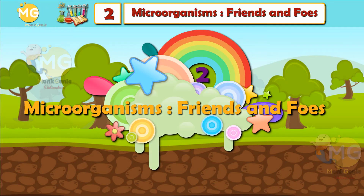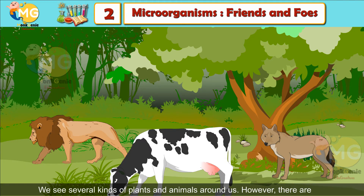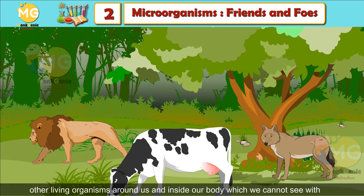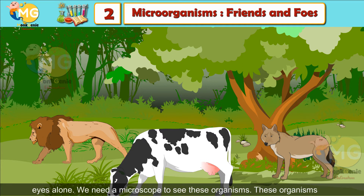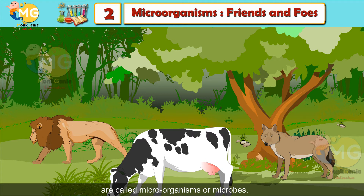Chapter 2: Micro-Organisms. We see several kinds of plants and animals around us. However, there are other living organisms around us and inside our body which we cannot see with our eyes alone. We need a microscope to see these organisms. These organisms are called micro-organisms or microbes.